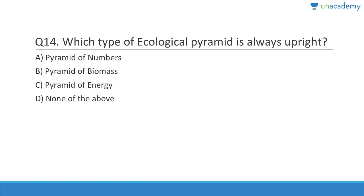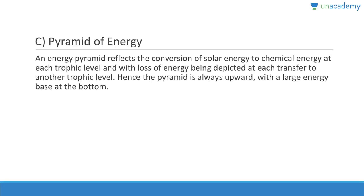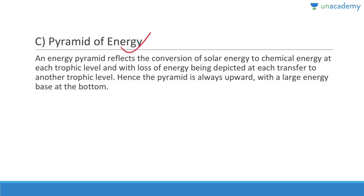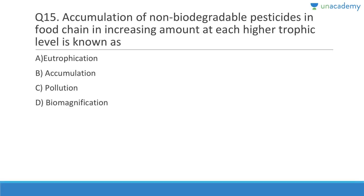Question fourteen: Which type of ecological pyramid is always upright? The answer is pyramid of energy, because of the ten percent law — energy always reduces from one trophic level to another. An energy pyramid reflects the conversion of solar energy to chemical energy at each trophic level, with loss of energy depicted at each transfer. Hence the pyramid is always upright with a large energy base at the bottom.